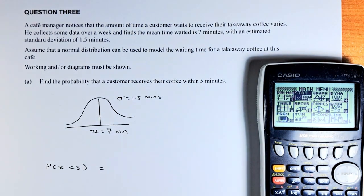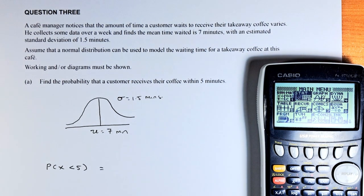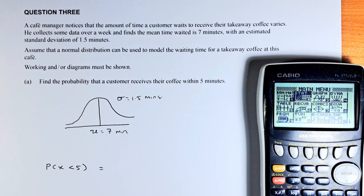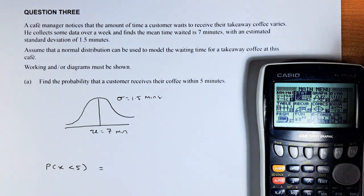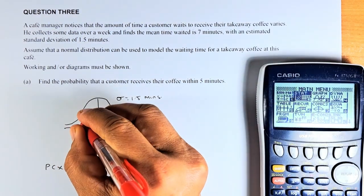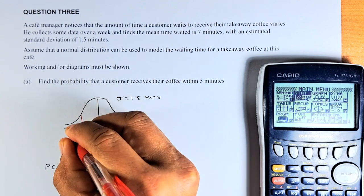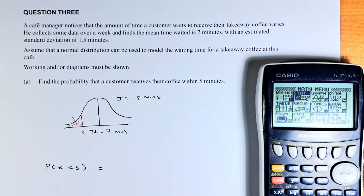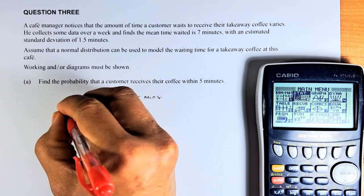Assume that a normal distribution can be used to model the waiting time for takeaway coffee at this cafe. Find the probability that a customer receives coffee within 5 minutes. So 5 minutes is going to be somewhere to the left of 7. We put it as 5 and the area which is less here, that will be probability that is less than 5 and that is what we're going to find.